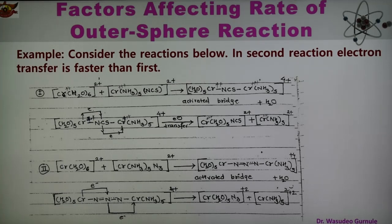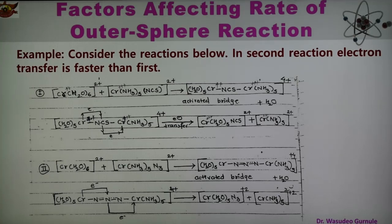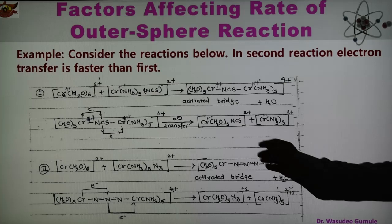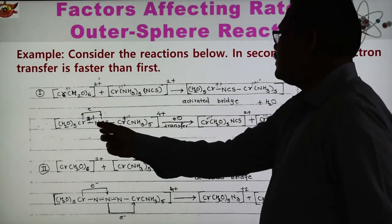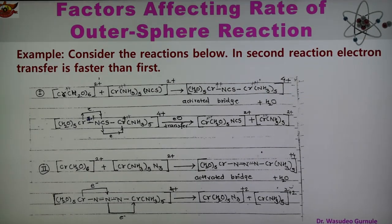In the first reaction, the chromium–sulfur linkage through NCS is weaker compared to the chromium–nitrogen linkage in the second reaction. In the second reaction, the azide bridge (Cr–N–N–N–Cr) is more stable due to resonance — this is a conjugated system. Because of conjugation and resonance, the activated bridge is more stable, so electron transfer is faster in the second reaction as compared to the first reaction.